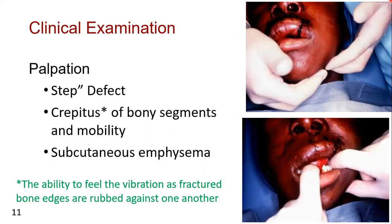The mandible should be carefully evaluated by extraorally palpating all areas of the inferior and lateral borders and the temporomandibular joint, paying particular attention to areas of point tenderness. Bimanual palpation of the suspected fracture area should be performed by placing firm pressure over the mandible posterior and anterior to the fracture area in an attempt to manipulate and elicit mobility. Bony crepitus of the bony segment should be checked. Mobility of the teeth in the area of the fracture should also be noted, and the occlusion should be re-examined after this maneuver.